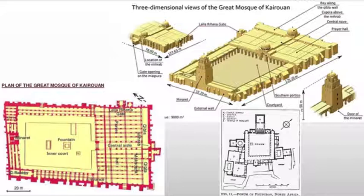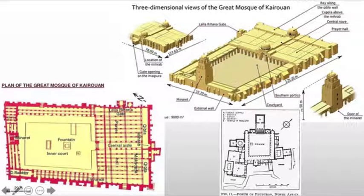We also see two domes — one over the entrance and one over the mirab — the two central points of the structure, as well as a minaret on the far side. These two domes delineate the two most important elements of the mosque: the entrance and the center of prayer. We see exactly the same thing in most Western churches, where you'll see bell towers on one end and oftentimes a steeple on the other, over the altar.